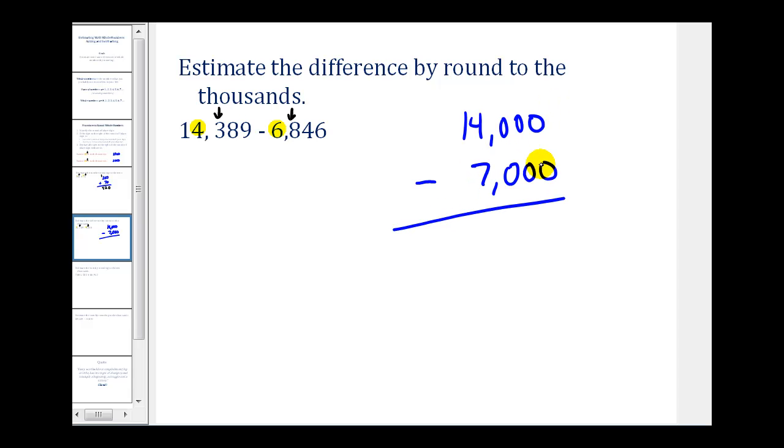Well 14,000 minus 7,000 would be 7,000, which would be an estimation for this difference.